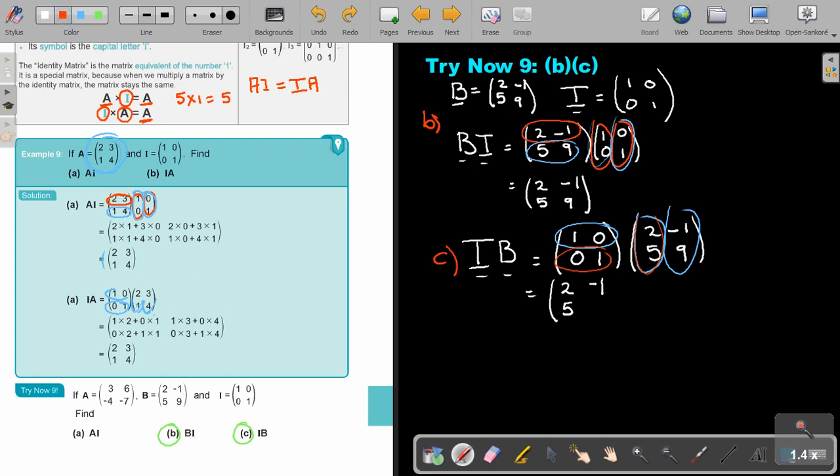And then, again, this second row by this column. So this is 0 times 5, can you see? Plus 1 times 9, that's 9. And again, it's exactly the same. So in this case, we can say that BI will be equal to IB. But only when one of them, one of the matrices is the unit matrix.